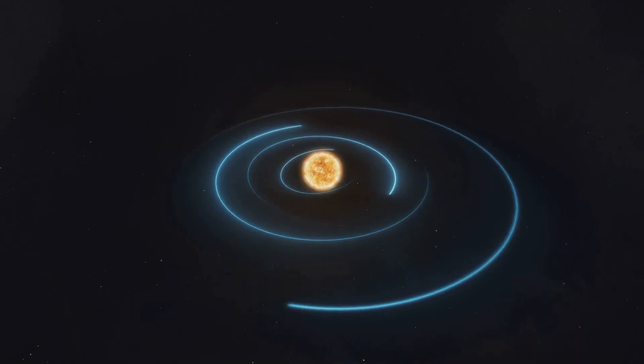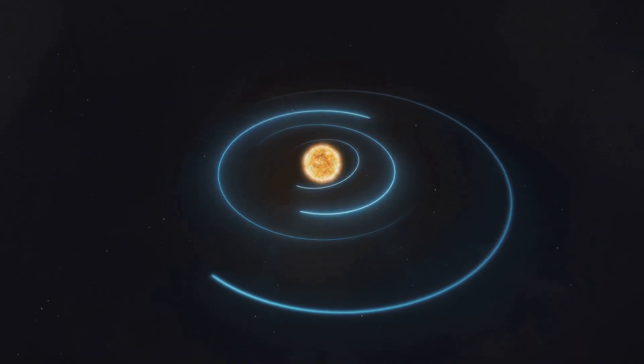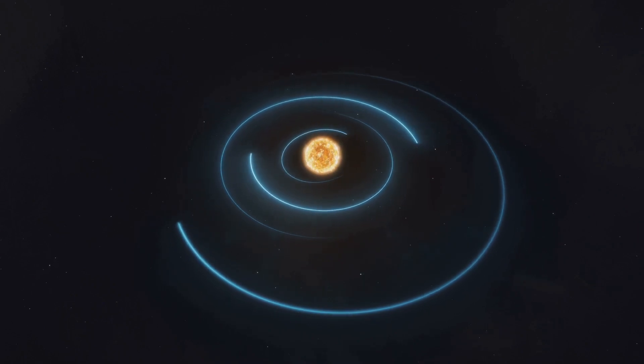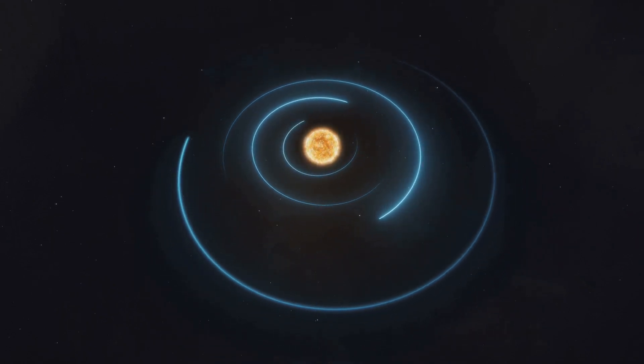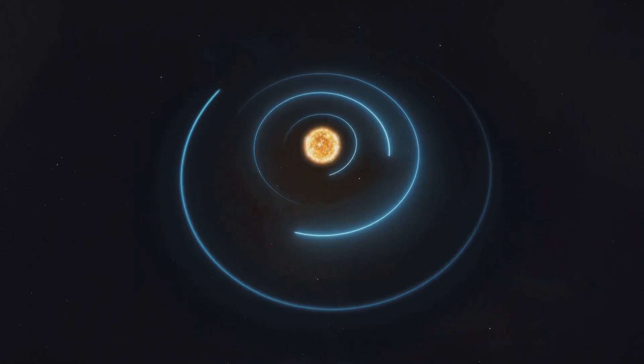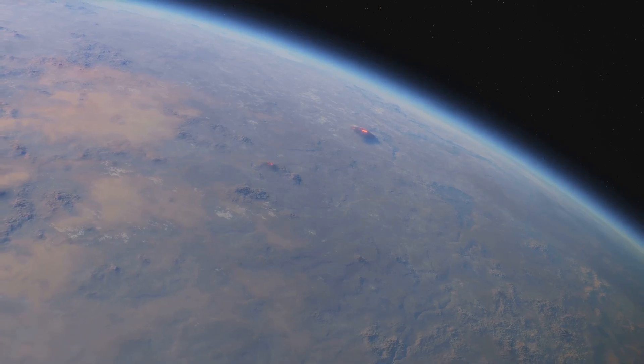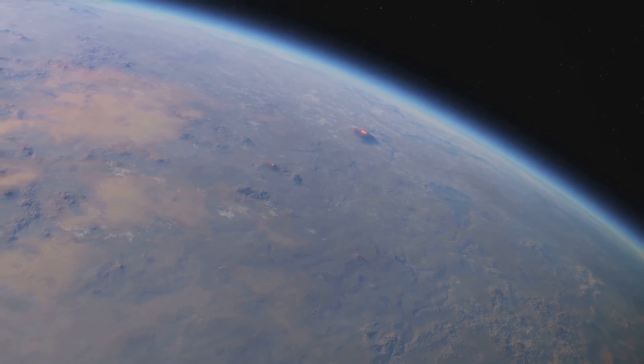One way to find exoplanets is to look for tiny dips in a star's brightness. This method, known as the transit method, involves monitoring the light from a star over time. This happens when a planet passes in front of its star, blocking a small amount of its light.